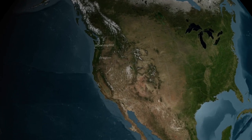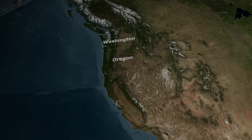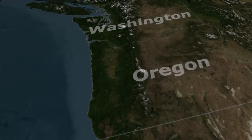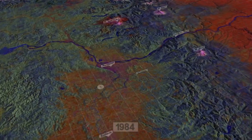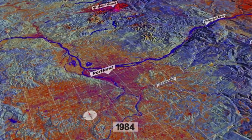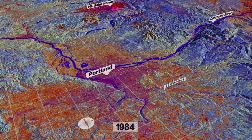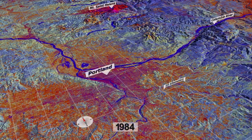My name is Robert Kennedy. I'm an assistant professor in the Department of Earth and Environment at Boston University. All of these images are numbers. Now we can display them on a monitor as different colors, but what we work with analytically are the numbers themselves.